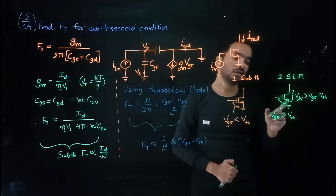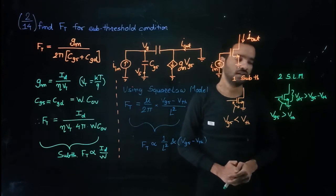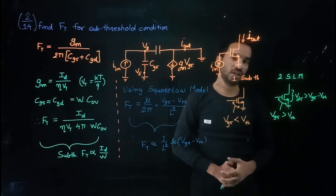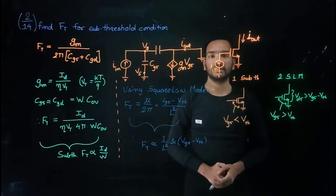And whenever your device Vgs is greater than Vt and your Vgs is greater than threshold voltage, then your Ft is proportional to 1 over L square.